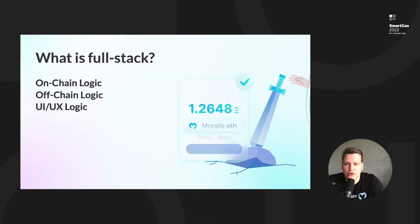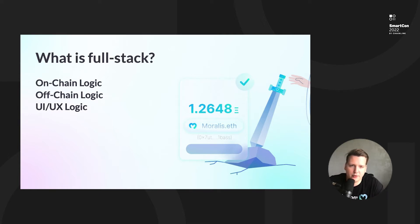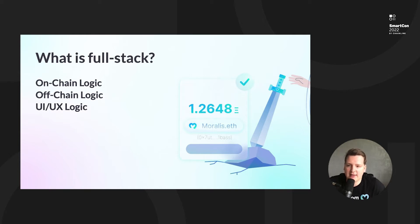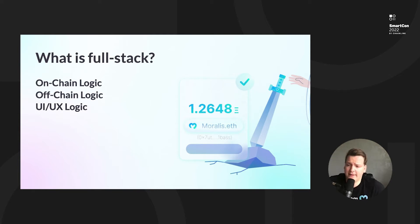Only Web3 can ensure digital ownership. But why is it still so difficult? There are three layers to think about. Number one: on-chain logic, where smart contracts, transactions, and money flows happen. Number two: off-chain logic — often the most difficult part, involving indexing and parsing data across many blockchains in real time, a massive big-data challenge. Number three: the UI and UX layer on top.